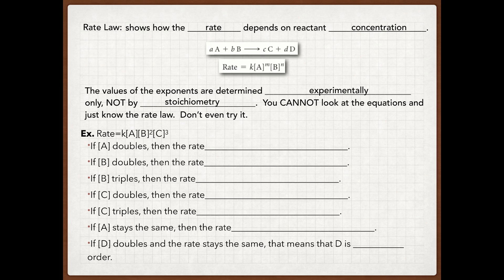For the first one, if A doubles — notice for this rate law that A is first order — whatever happens to the concentration of A, it doubles here. You're going to raise that to the first power because it's first order, and that's what's going to happen to your rate. So in this case, it's going to be two raised to the one, so your rate is going to double.